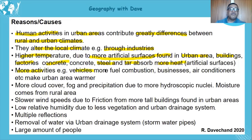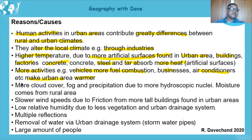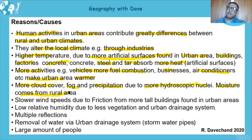More activities, more vehicles, fuel combustion, businesses, and air conditioners operating all make the urban area warmer. There's also more cloud cover, more fog, and more precipitation due to more hygroscopic nuclei. Moisture from the rural areas actually moves into the city, and you may wonder why the city gets more rainfall despite having less moisture of its own.